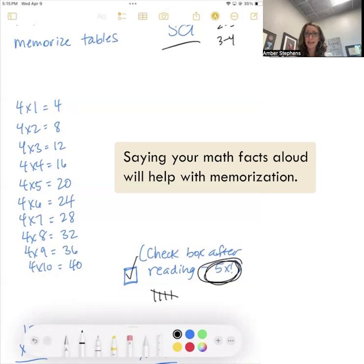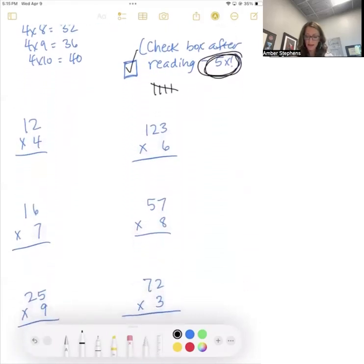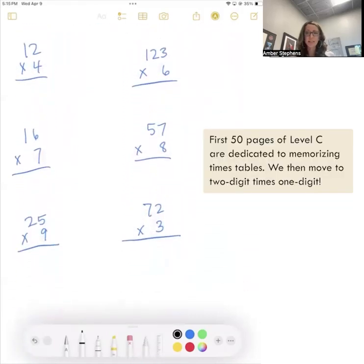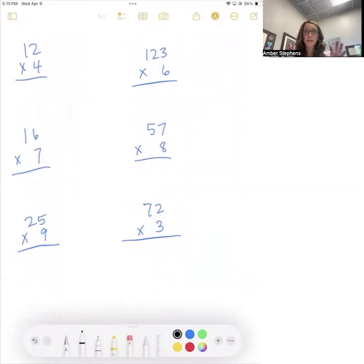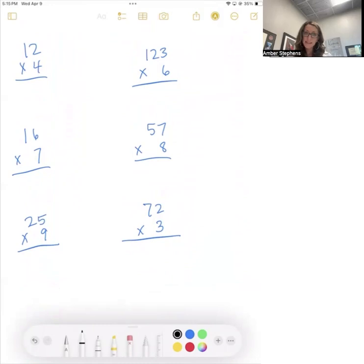Once the times tables are memorized, that's the first 50 pages of the level, we go into two times one digit multiplication. So I'm going to demonstrate how we do that here. You guys have learned that in Level B, we try to do our math mentally. We try to not write carries or borrows. It's the same in Level C, no different.